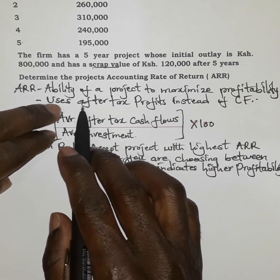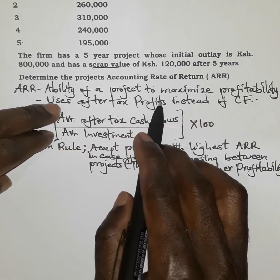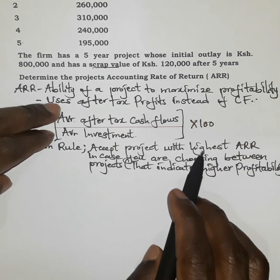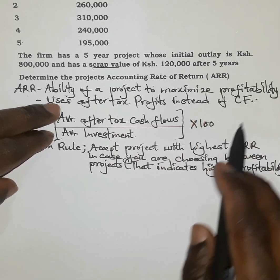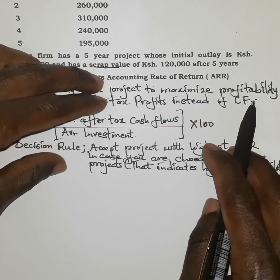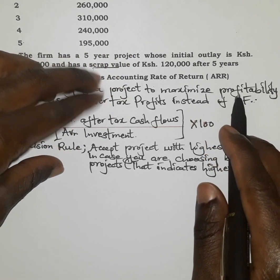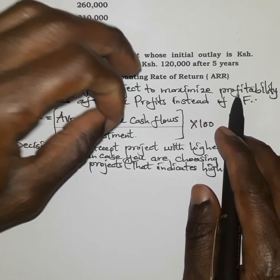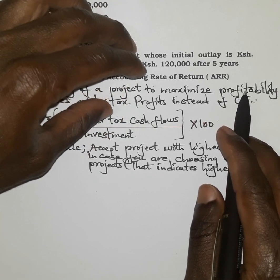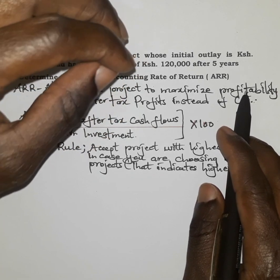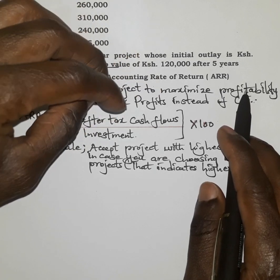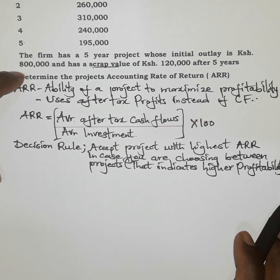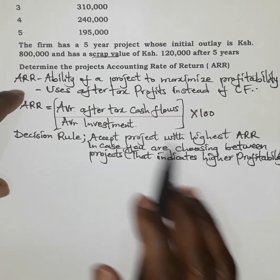This technique uses after-tax profits instead of cash flows. In business, we normally account for profits after tax, because after deducting tax, that is when we realize whether we have made a higher profit, a low profit, or a loss.